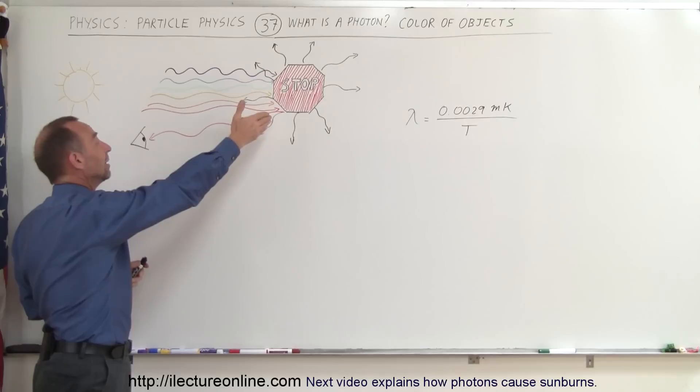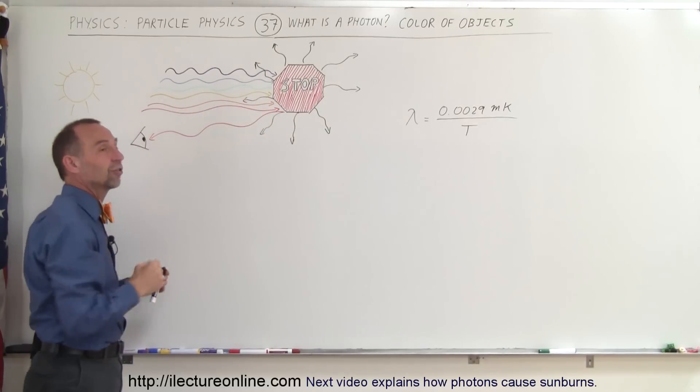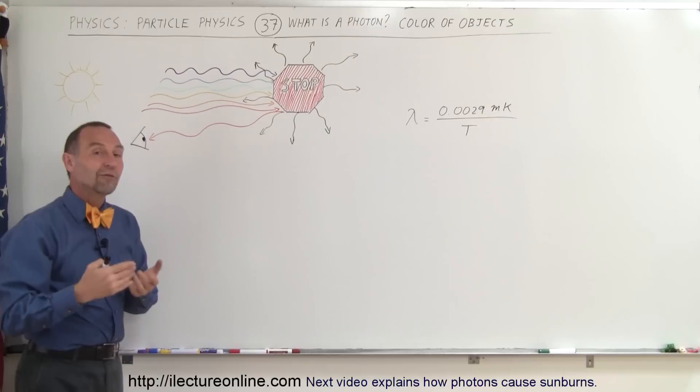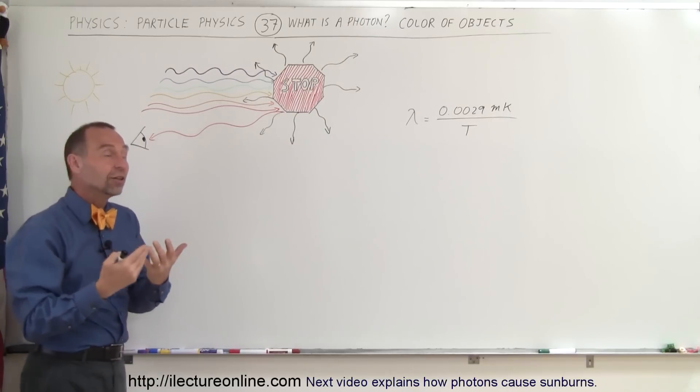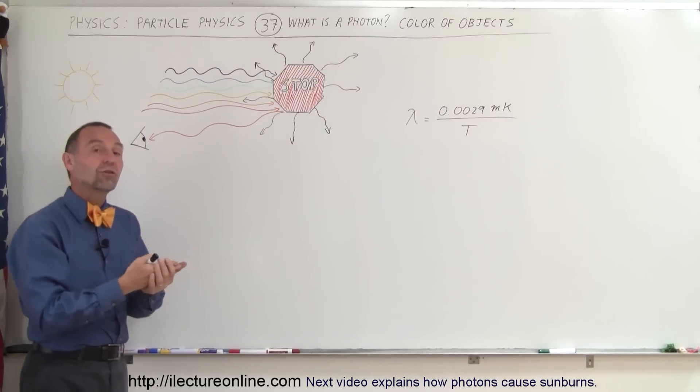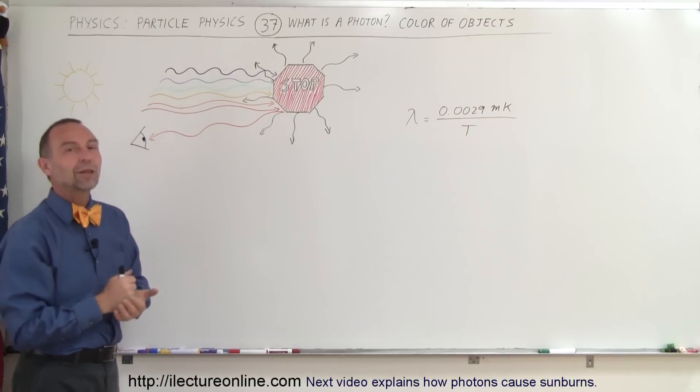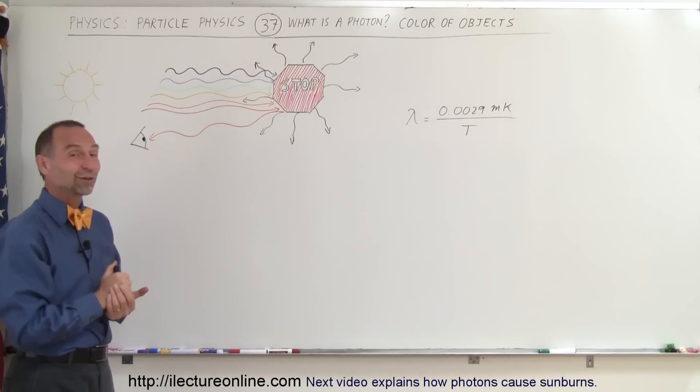But the reason why the sign looks red is because only the red photons are being reflected and all the other photons are being absorbed. Again, photons is what allows us to see color in the selectivity of which photons are absorbed and which photons are reflected, and the reflective photons is the color that we end up seeing, and that's how that works.